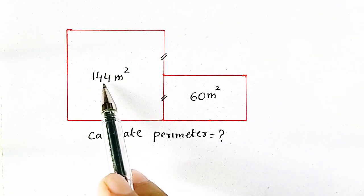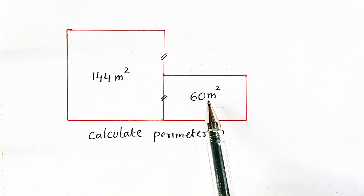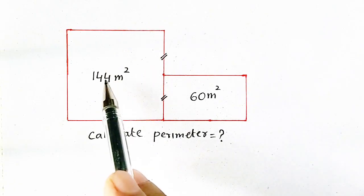Here, it is 144 meter square and it is 60 meter square. It is the area of a square.